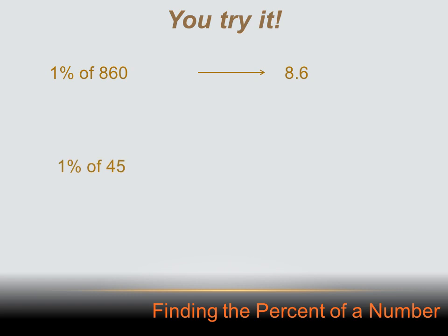What's 1% of 45? Figure it out in your head. It's 0.45 — we just move the decimal two to the left, and we end up with 1% of 45 equals 0.45.